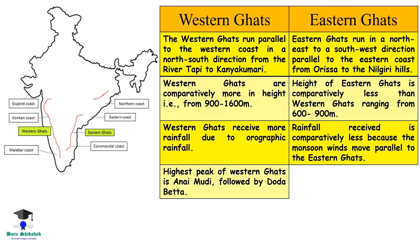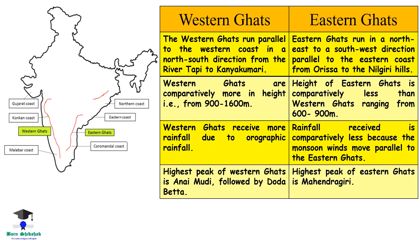The highest peak of the Western Ghats is Anamudi, followed by Doddabetta. The highest peak of the Eastern Ghats is Mahendragiri.